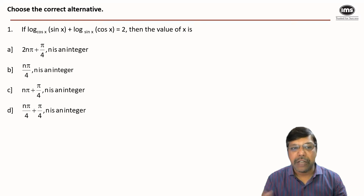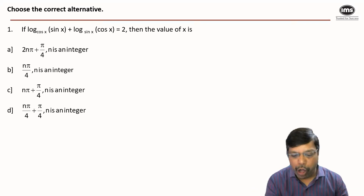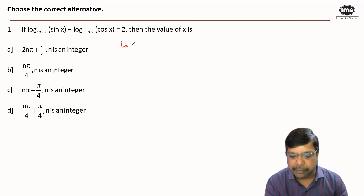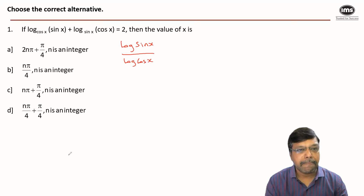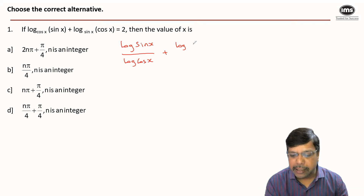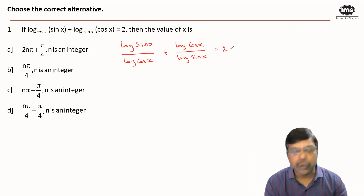For this question let us look at the conventional method. Log sin x base cos x can be written as log(sin x) / log(cos x), plus log cos x base sin x can be written as log(cos x) / log(sin x), and this is equal to 2.